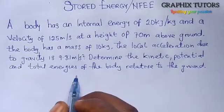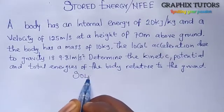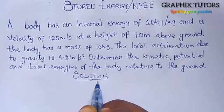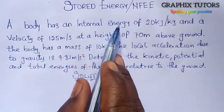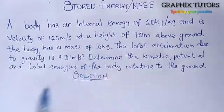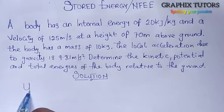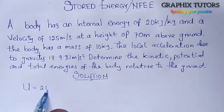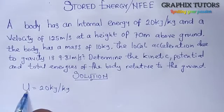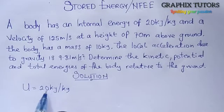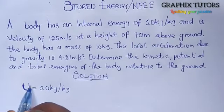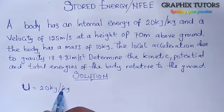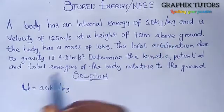For this kind of question, what you first do is write out your parameters to make things easier. The mass is given. The body has an internal energy — internal energy is a form of energy — and the symbol for it is U. That is given as 20 kilojoules per kilogram. Because it is kilojoules per kilogram, this is the intensive form, so we use a small u, not a big U. Kilojoules per kilogram is an intensive property — that is, per unit mass.